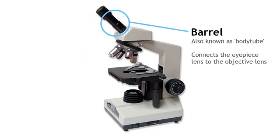The barrel. It is also known as the body tube. The barrel connects the eyepiece lens to the objective lens, which we'll look at in a minute.